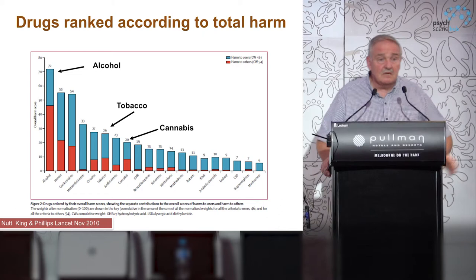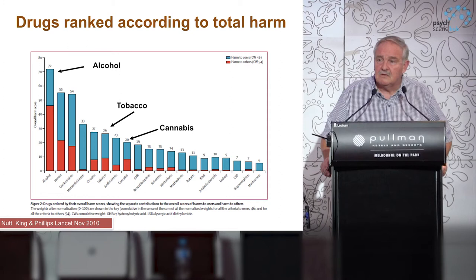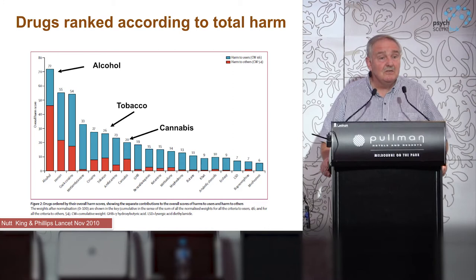But governments don't want to do that. Governments want to focus on drugs on the right of the chart, where there is very little evidence of social harm and less evidence of personal harm. The reason they choose to do that is because the drinks industry is one of the most powerful and effective lobbying industries there has ever been — perhaps second only to the defence industry.